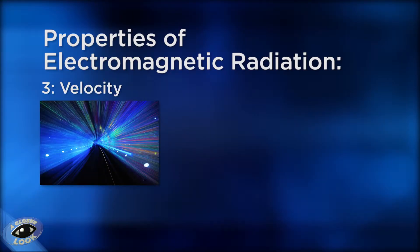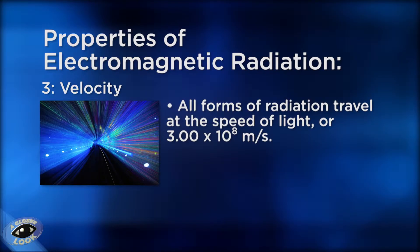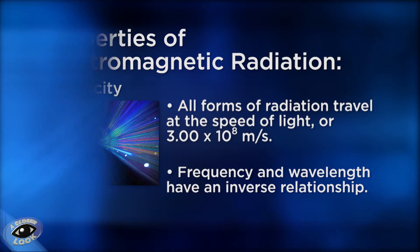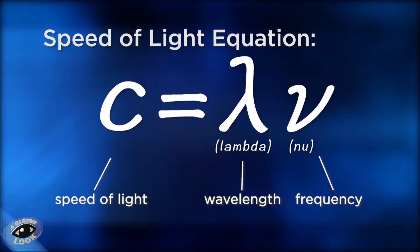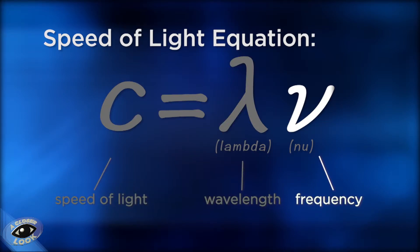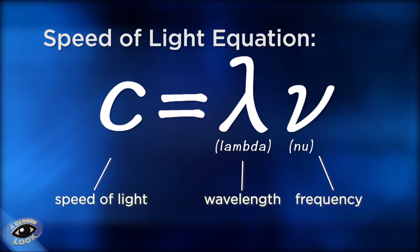The third property of electromagnetic radiation is velocity. All forms of electromagnetic radiation travel at the same velocity — the speed of light, or 3.00 times 10 to the eighth meters per second. This establishes an inverse relationship between frequency and wavelength. We can see this inverse relationship with the speed of light equation, where the speed of light, represented by c, is equal to the wavelength times frequency.